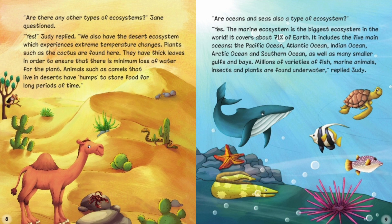'Are there any other types of ecosystems?' Jane questioned. 'Yes,' Judy replied. 'We also have a desert ecosystem which experiences extreme temperature changes. Plants such as the cactus are found here. They have thick leaves in order to ensure that there is minimum loss of water for the plant. Animals such as camels that live in deserts have humps to store food for long periods of time.'